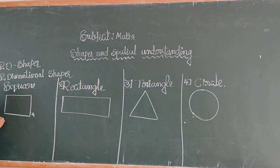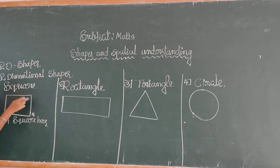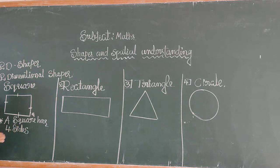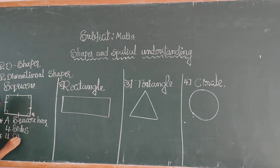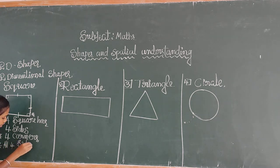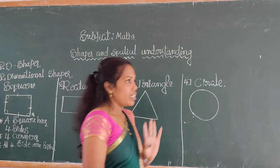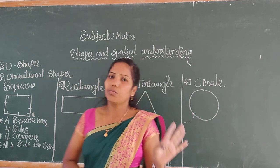Dear students, a square has how many sides? 1, 2, 3, 4 — there are 4 sides. And how many corners? There are 4 corners in a square shape. And all 4 sides are equal. So the features of a square are: 4 sides, 4 corners, and all 4 sides are equal.